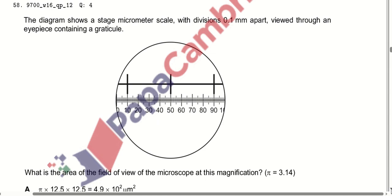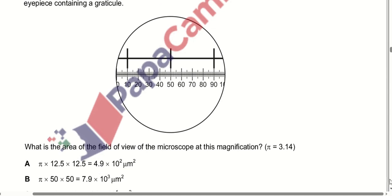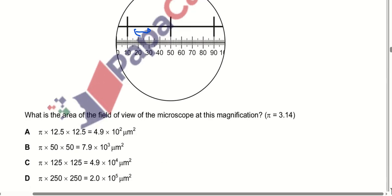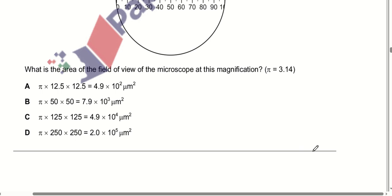MCQ number 58: the diagram shows a stage micrometer scale with divisions 0.1 mm apart, viewed through an eyepiece containing a graticule. What is the area of the field of view of the microscope at this magnification? Using pi = 3.14 in the calculation, option C is correct.